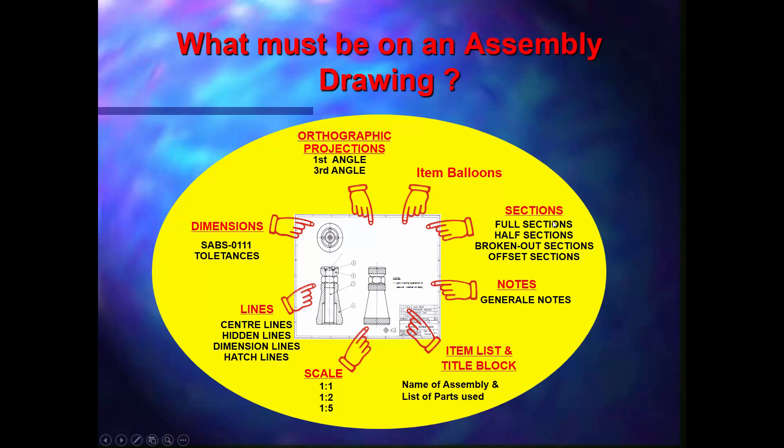Sections, depending what views they want, you'll either show the full sectional view as shown here in your front view. A half sectional view is where we only show a partial view of it. Broken out section will just be a detail of a certain part.